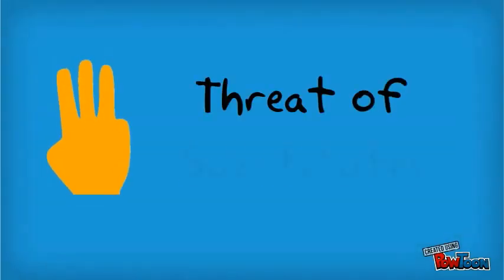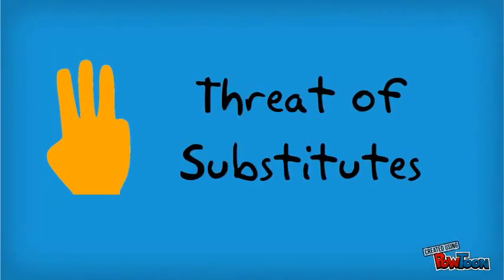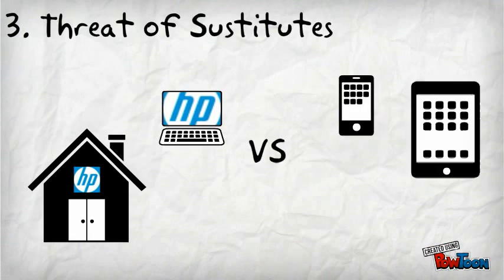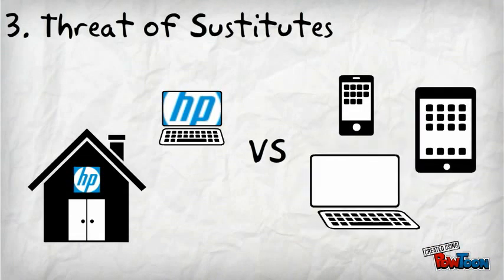Next is the threat of substitutes. This is really the ability of your customers to find a different way of doing what you do. If substitution is easy and viable, then this will weaken your power. So in this case, the threat of substitutes is pretty high.